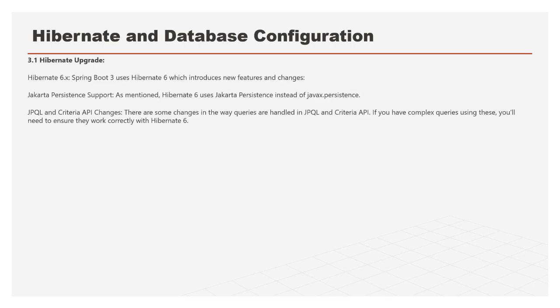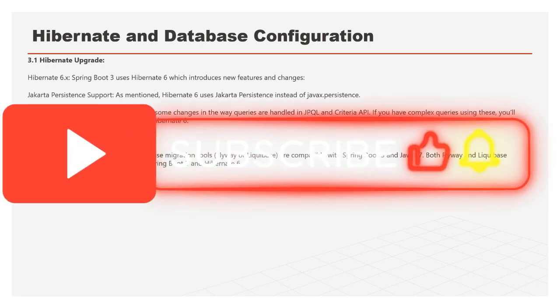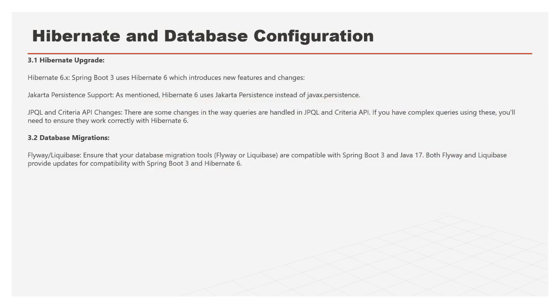Hibernate 6.0 is the latest version being updated with new features. The Jakarta Persistence API replaces javax.persistence. If you are using JPQL or the Criteria API, make sure you make the relevant changes and verify your complex queries still run after migration. For database migration tools like Flyway or Liquibase that run scripts automatically on deployment, ensure they are also upgraded and compatible with both Spring Boot 3 and Java 17.